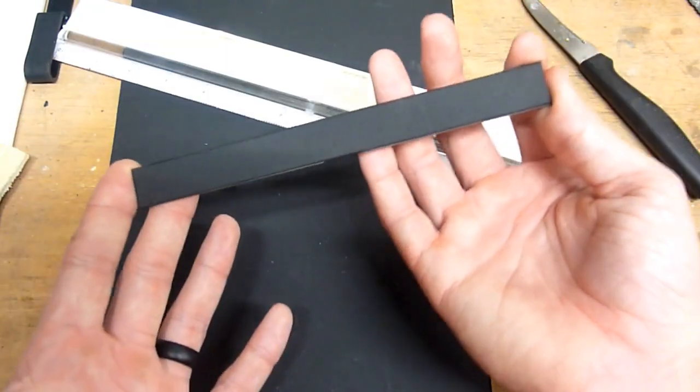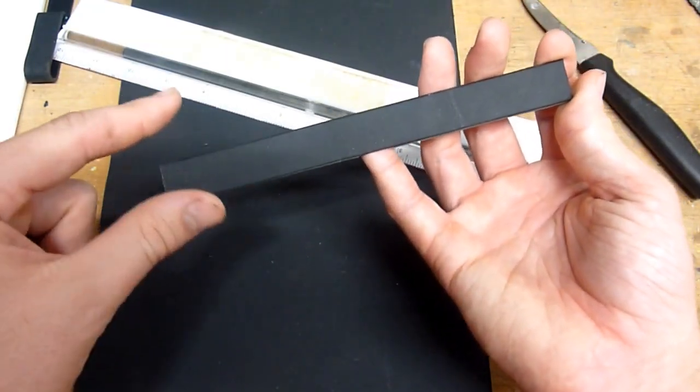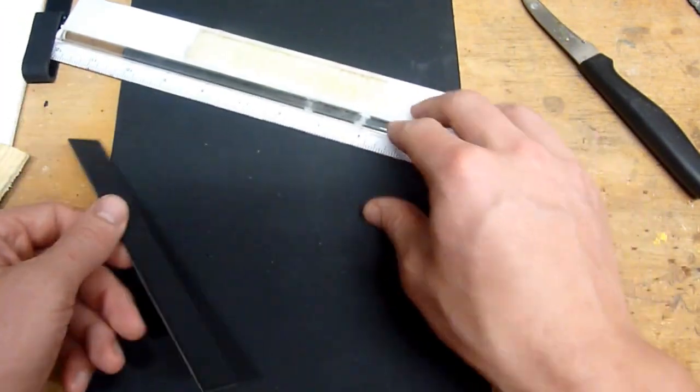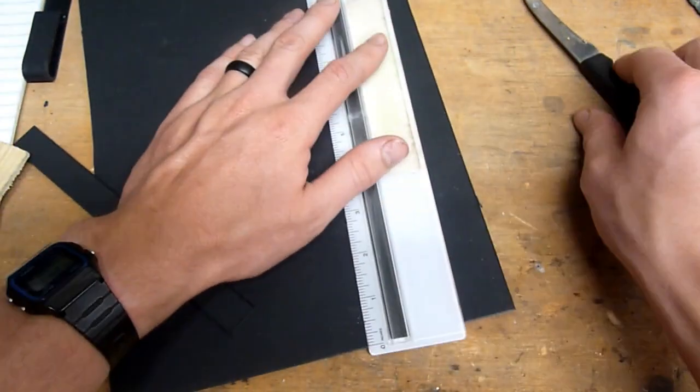First off you're going to need a 7-inch long by 3/4-inch wide piece of kydex. To make that you can just cut it from your sheet.